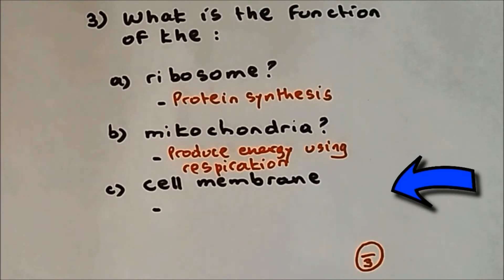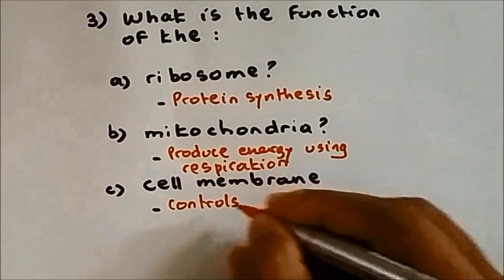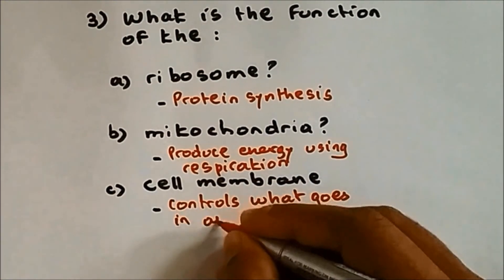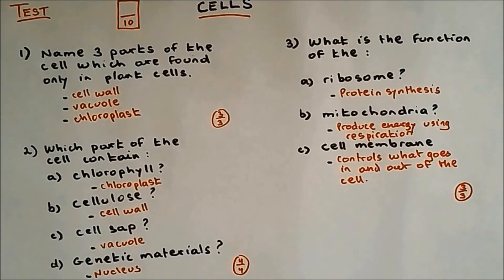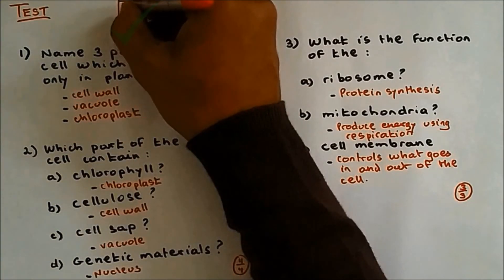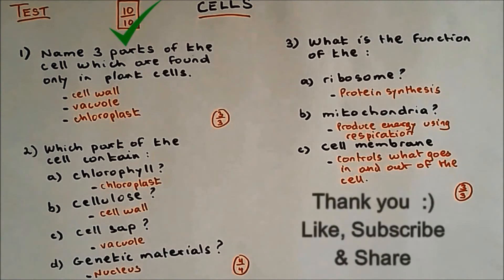The cell membrane controls what goes in and out of the cell. Everything adds up to 10. Well done if you got 10 out of 10. If you think you need more practice please go and watch my teaching video. Thank you for doing the test.